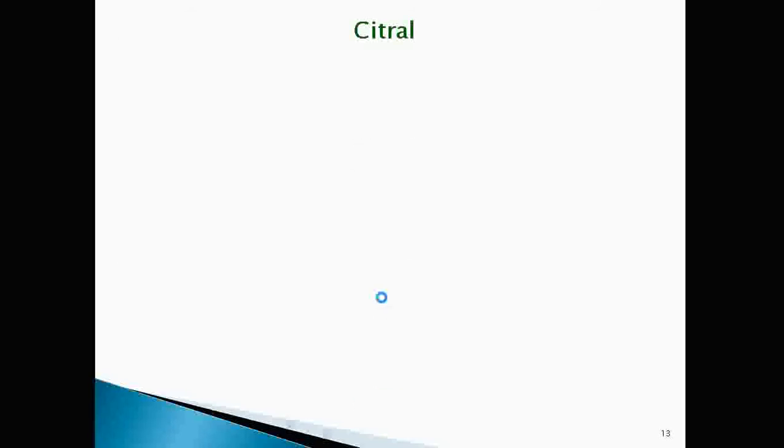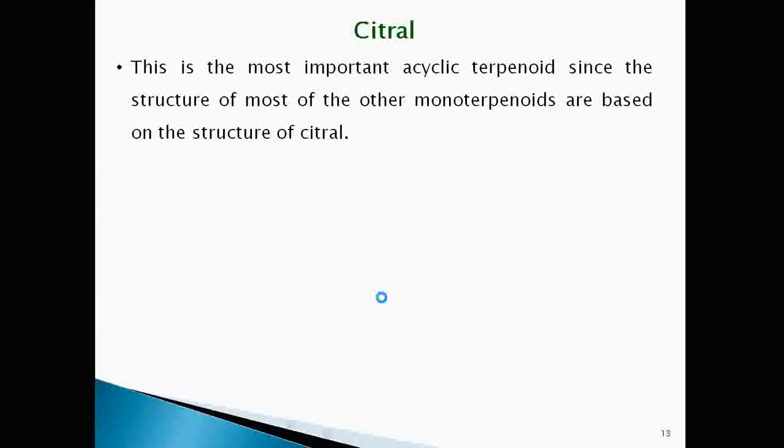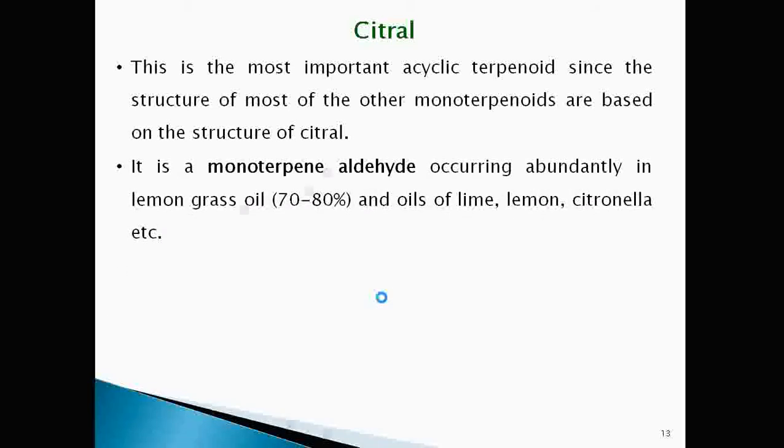Now let's study the structure of most important terpene that is citral. It is the most important acyclic terpenoid since most of the structure of other monoterpenoids are based on structure of citral. It is monoterpenaldehyde occurring abundantly in lemongrass oil, up to 70 to 80 percent. Citral is present in lemongrass oil and also the oils of lime,